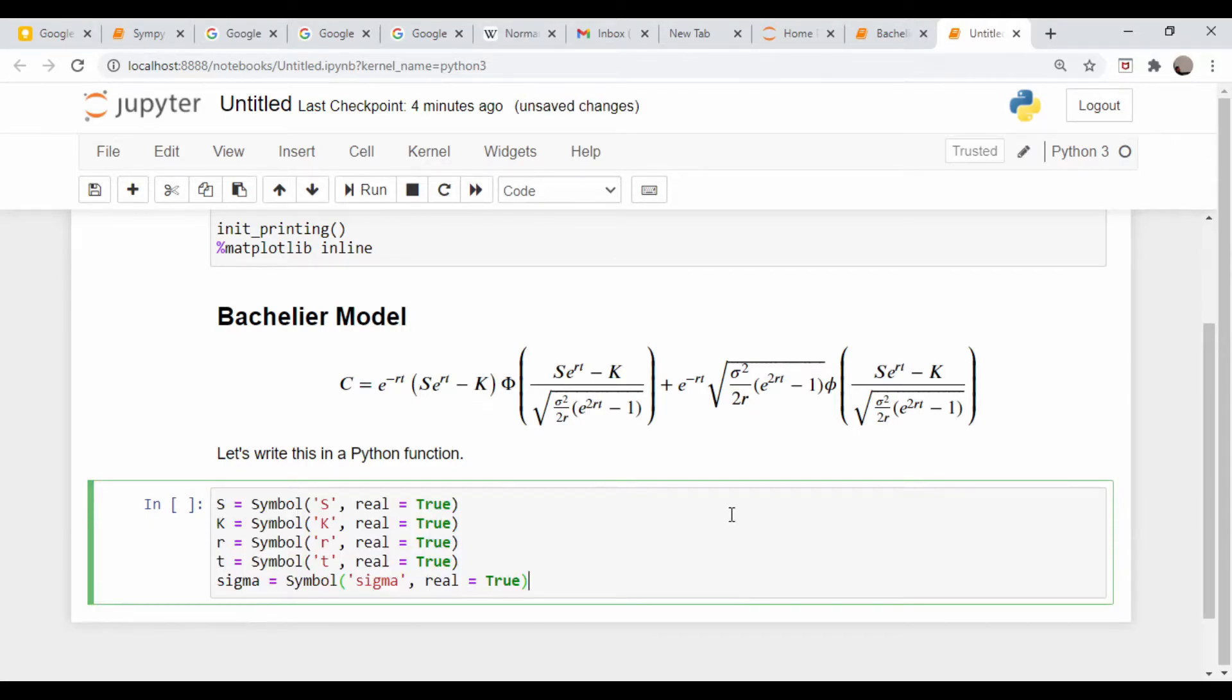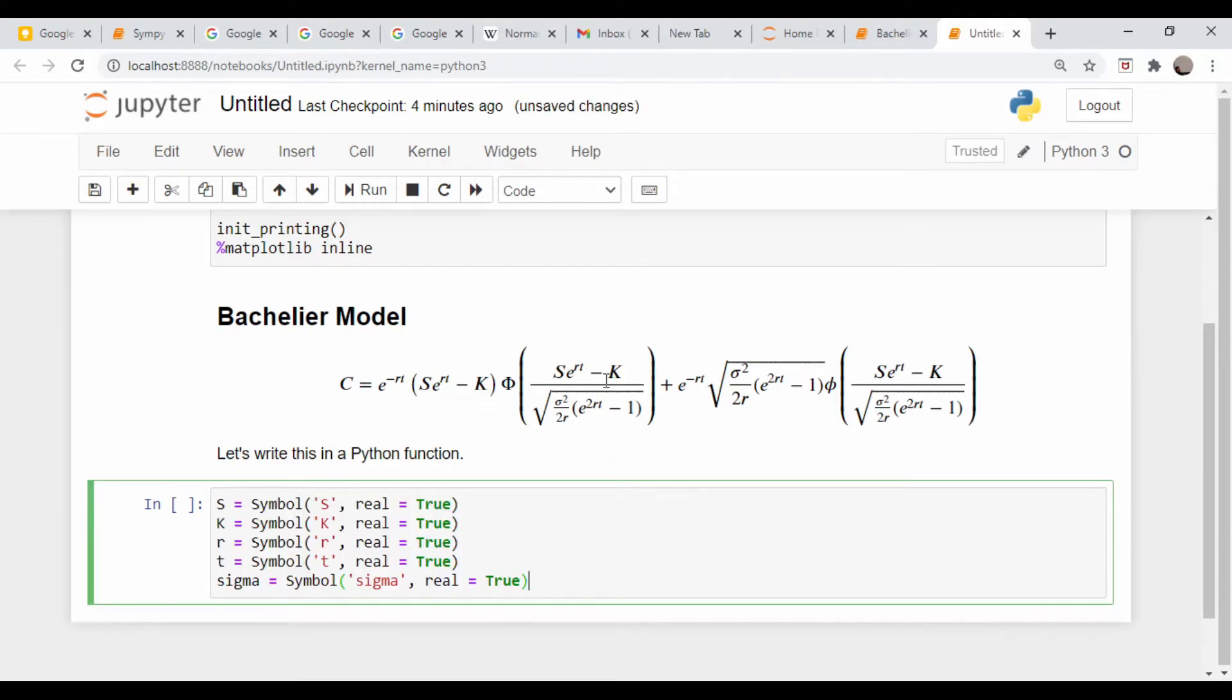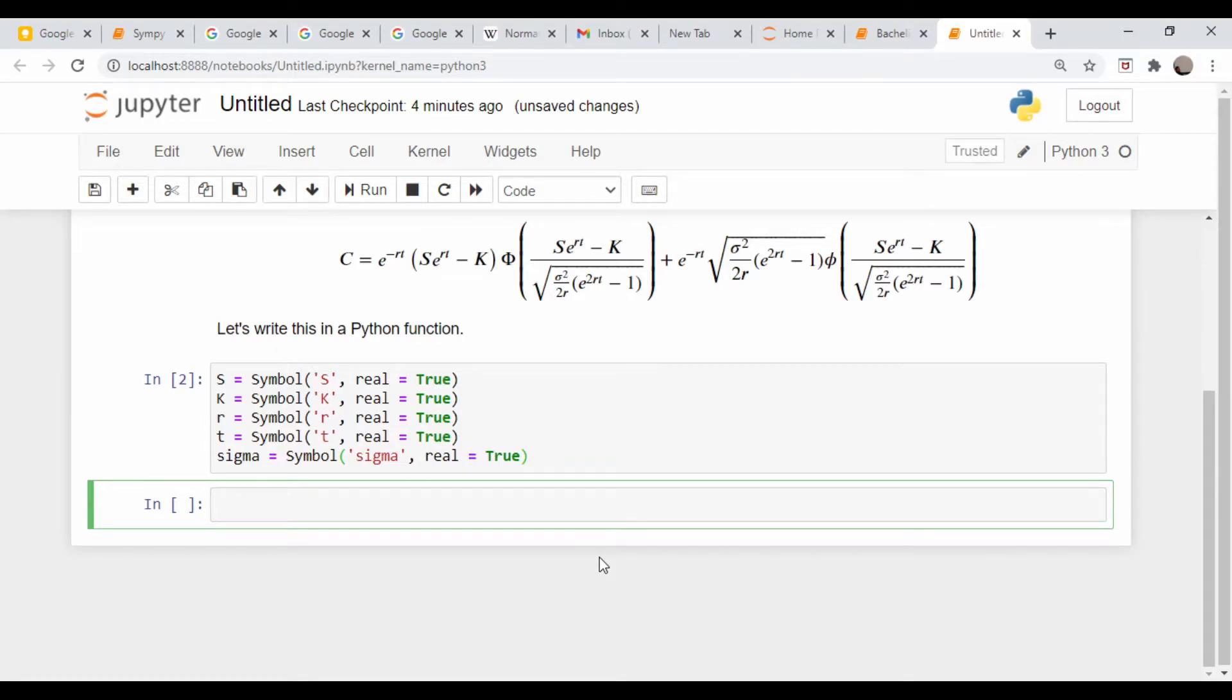The first thing we're going to need is to define all of our variables that go into this equation: stock price, strike price, all this stuff as usual. I'm going to specify that these are all real valued functions. Run that. That looks good.